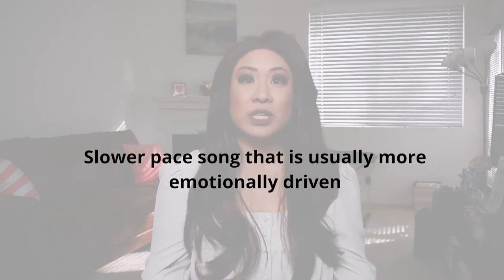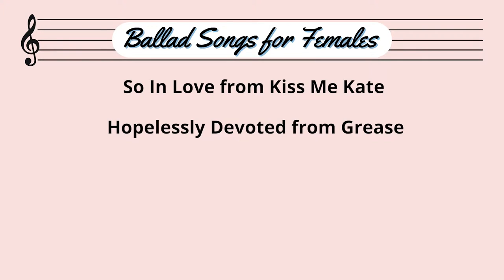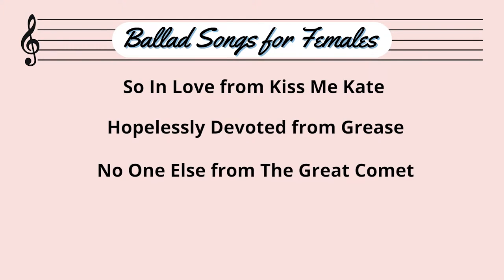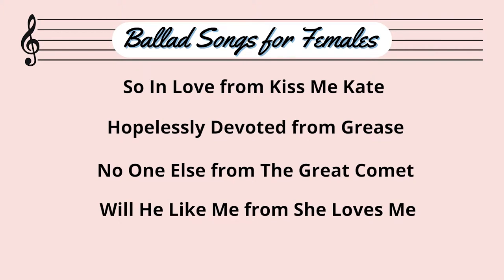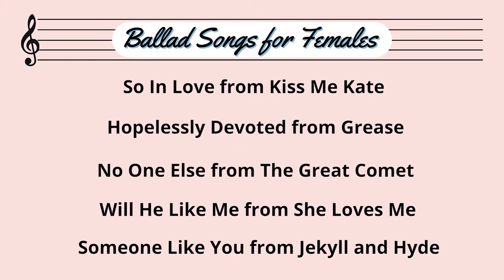Now let's talk about the difference between a ballad song and an uptempo song. A ballad is a slower-paced song that is usually more emotionally driven — about love, heartbreak, or something traumatic. You know it's a ballad when you need to sing longer notes and longer phrases. Some ballad examples for females include: "So In Love" from Kiss Me Kate, "Hopelessly Devoted to You" from Grease, "No One Else" from The Great Comet, "Will He Like Me" from She Loves Me, and "Someone Like You" from Jekyll and Hyde.